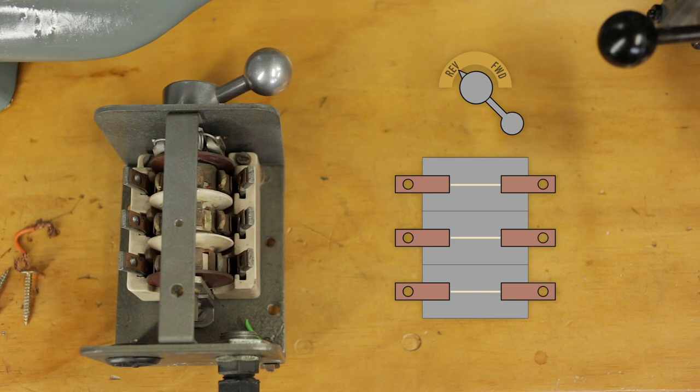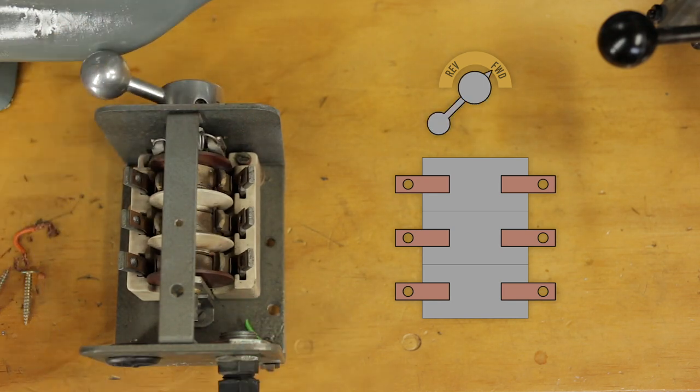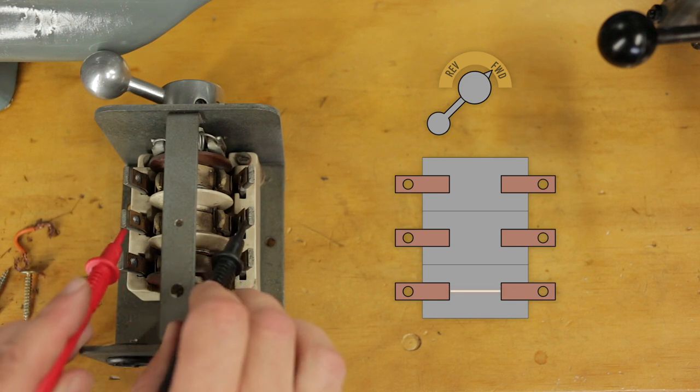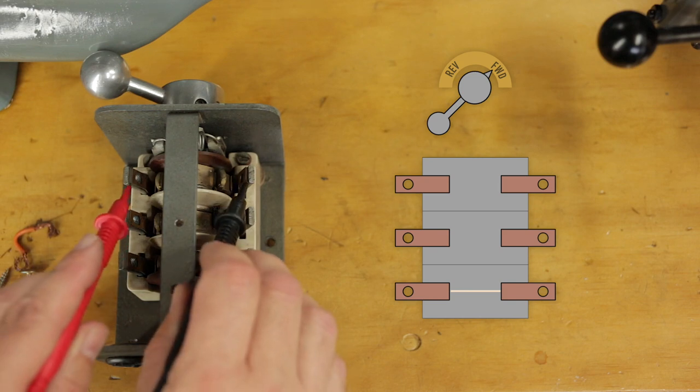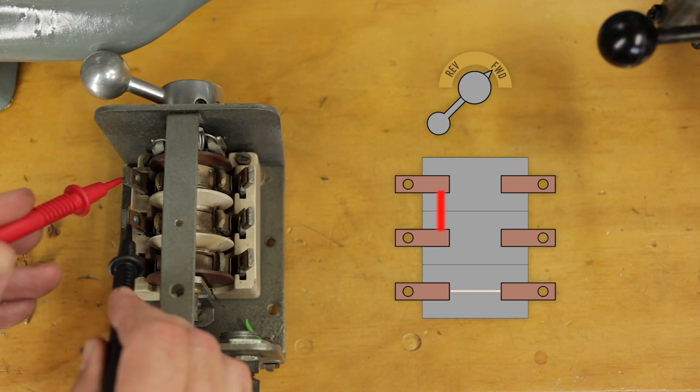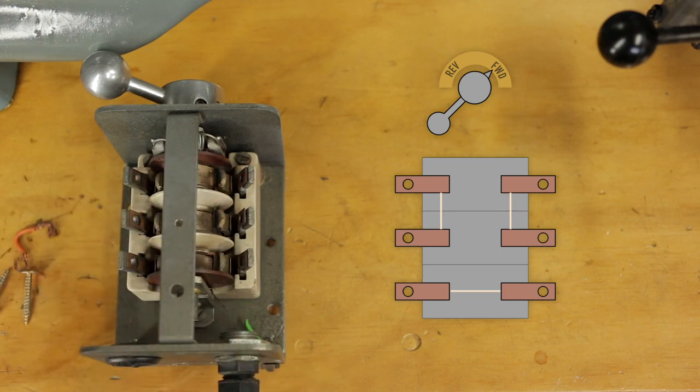Now let's see what's connected when we put it into forwards. So the bottom two contacts are connected just like they were in reverse. But I'm getting nothing across the other two pairs. However, now the top two pairs, instead of connecting across the switch, the multimeter is telling me that they're connecting I guess you would say vertically up to the next contact. So that little test has told me everything I need to know to go away and hopefully figure out a way to wire up the motor.